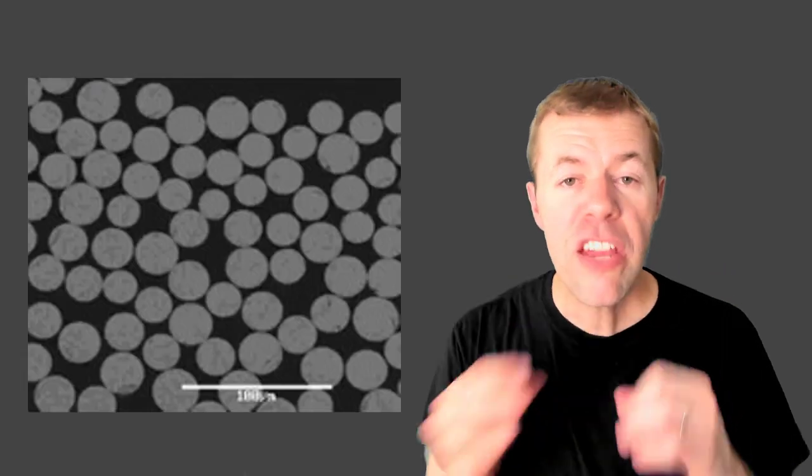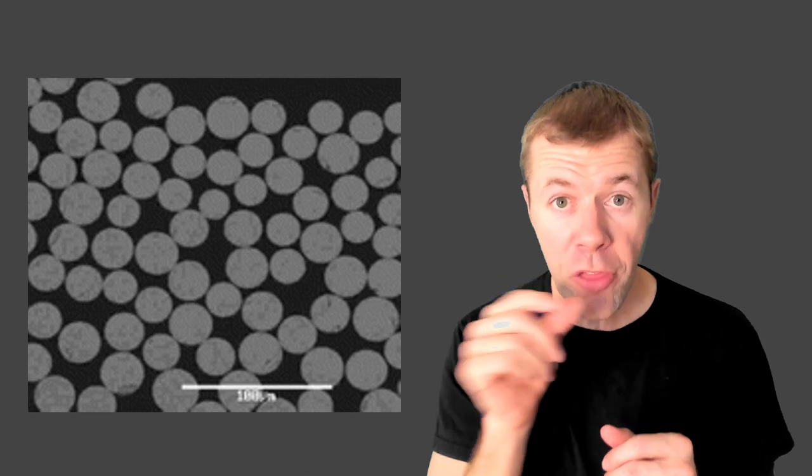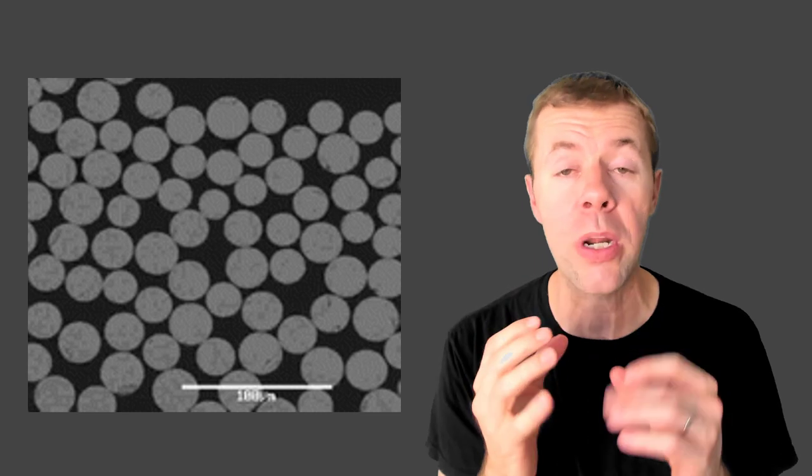FRP rebar, fiber reinforced polymer, looks very different than steel rebar. There's tons of benefits with it though. If we zoom in on the cross-section it would look something like this. Now that bar at the bottom, that white bar, that is the width of two human hairs. So this is zoomed in pretty far.